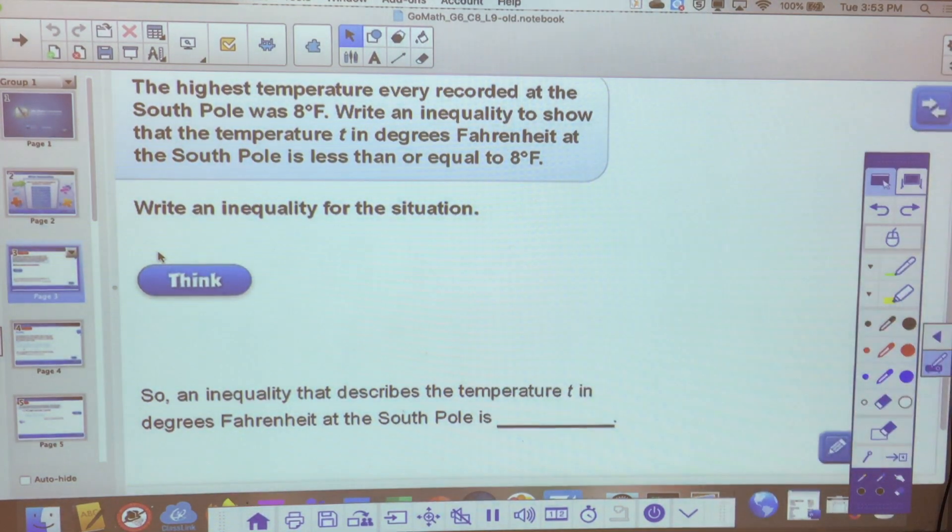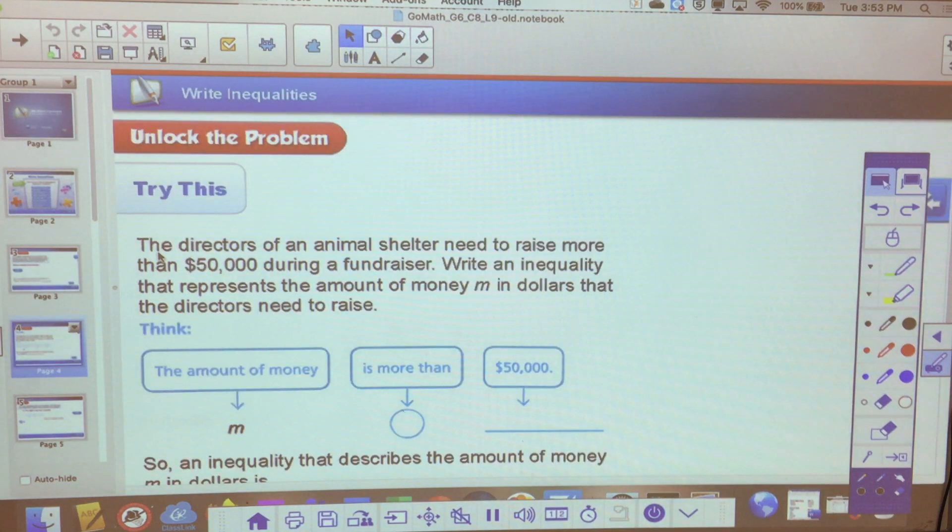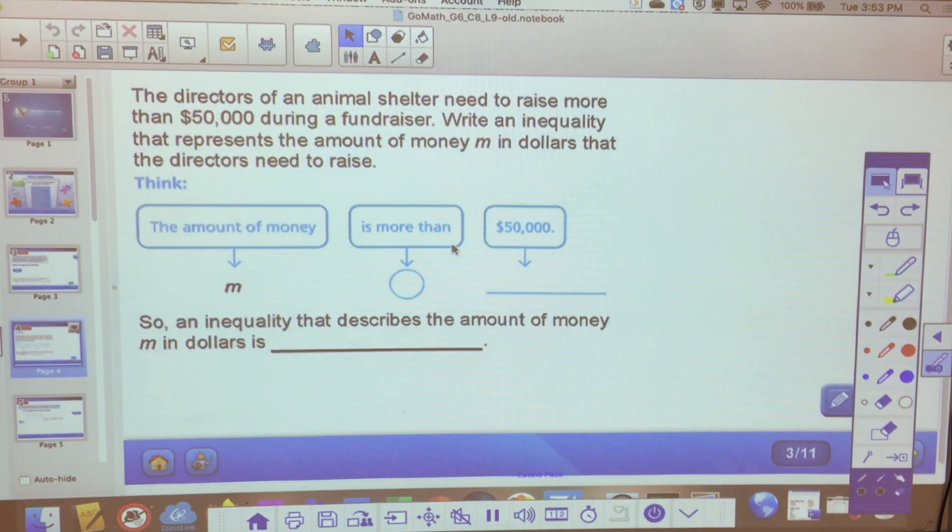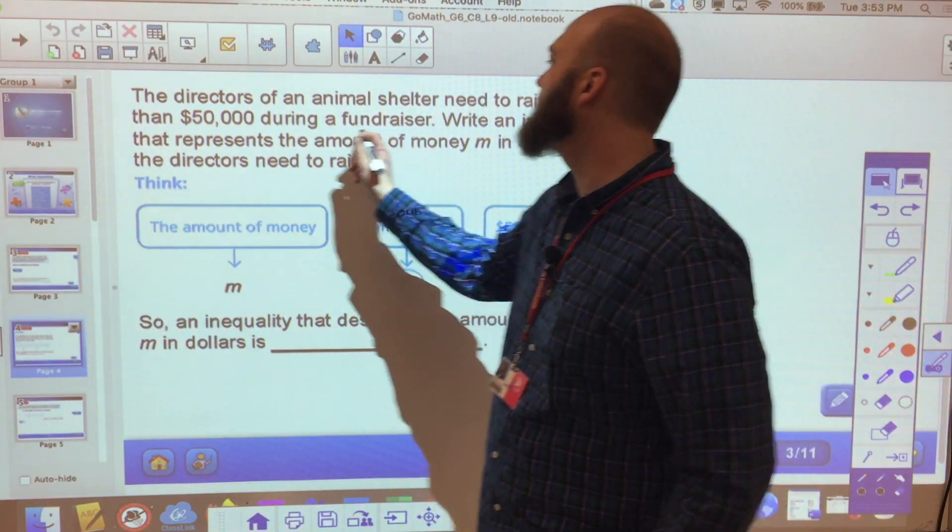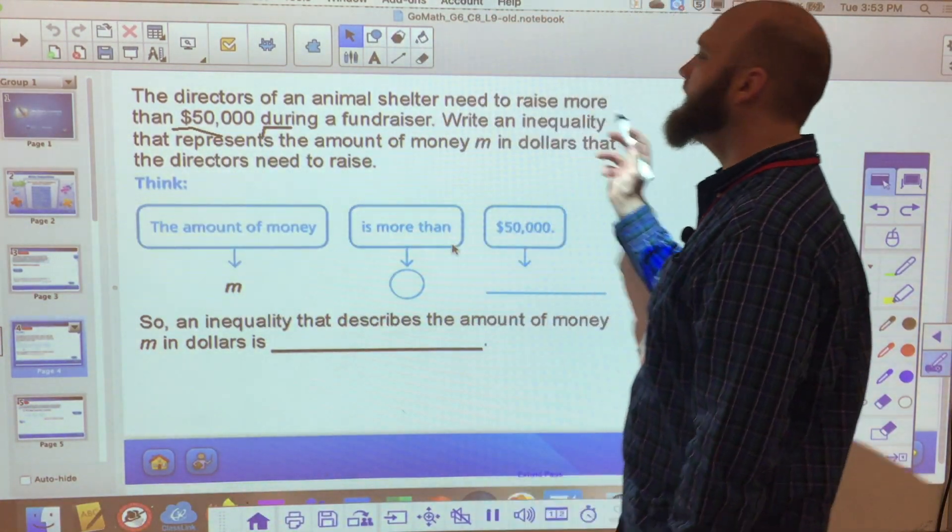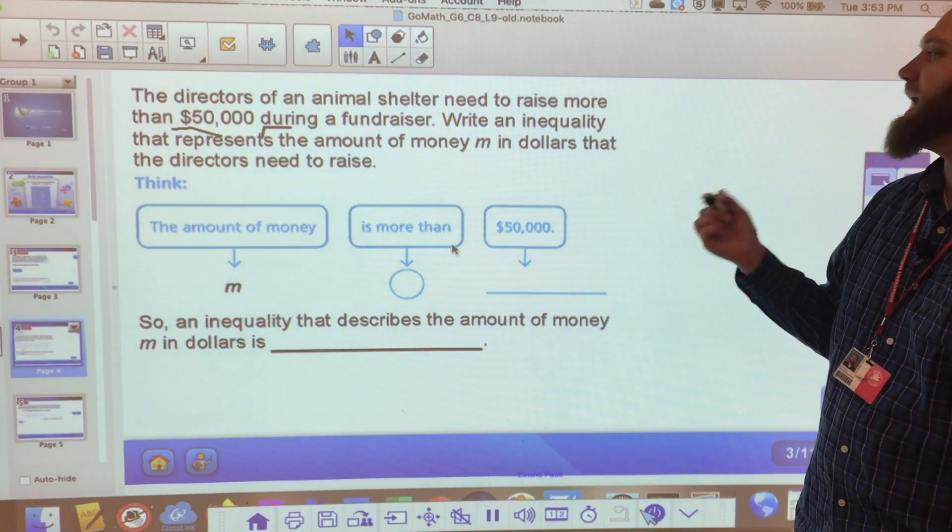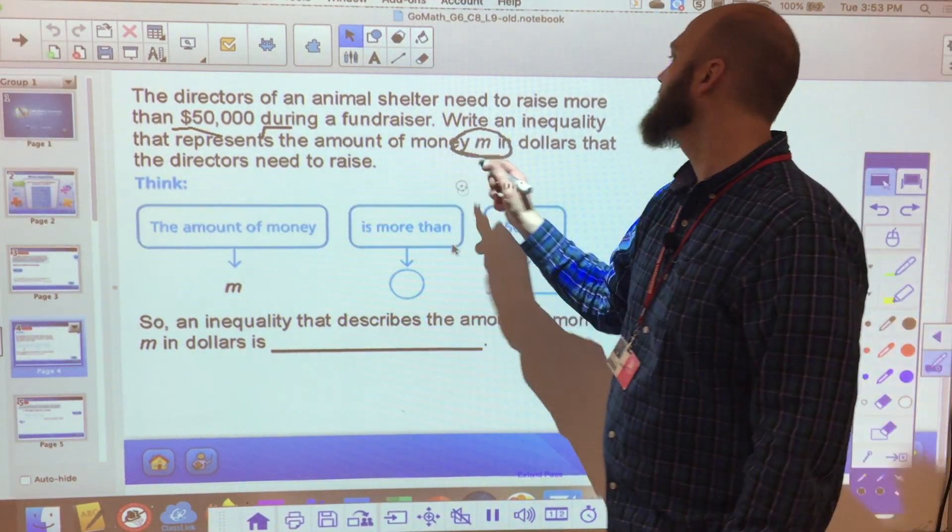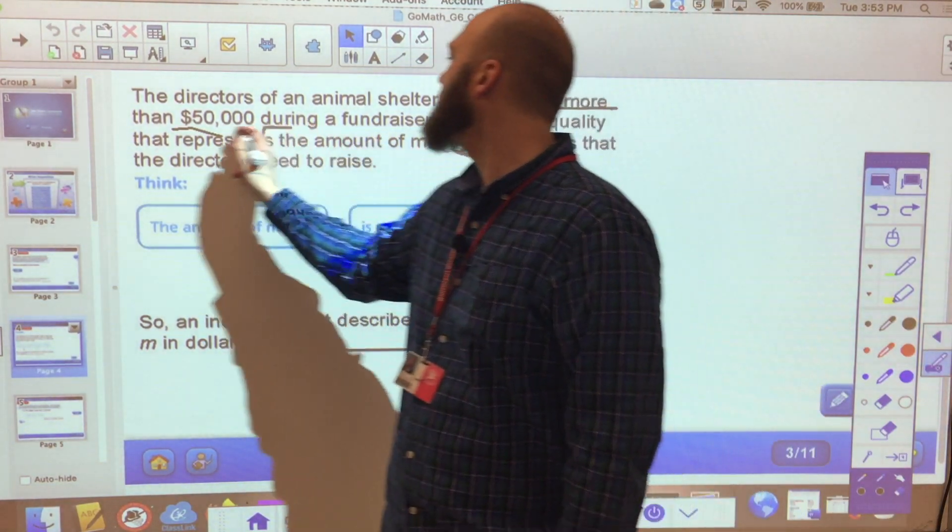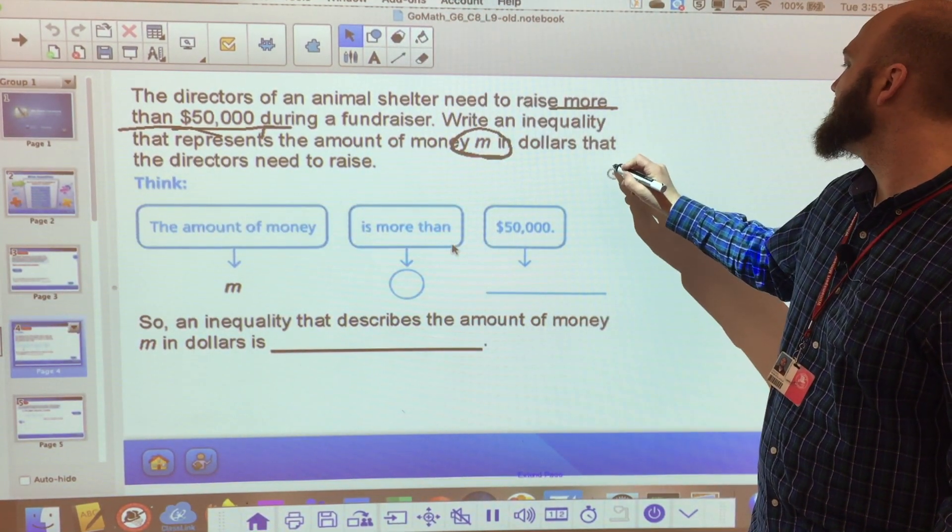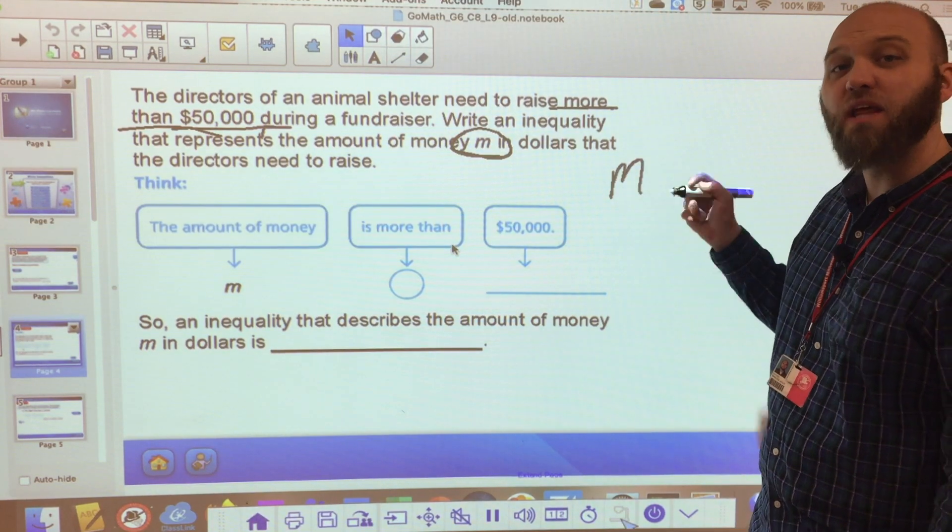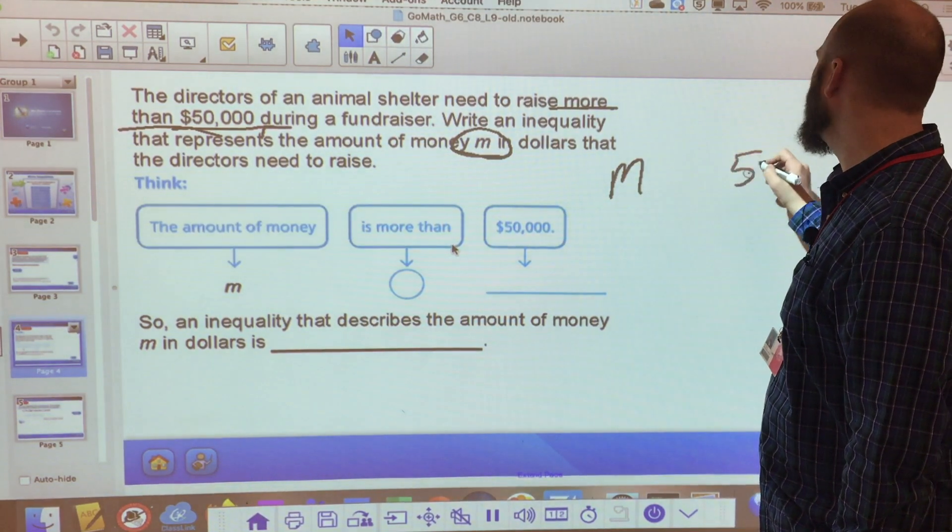Let's take a look at one more. The directors of an animal shelter need to raise more than $50,000 during a fundraiser. Write an inequality that represents the amount of money, M in dollars, they need to raise. Okay, so I have M, that's how much money we want to raise, right? And $50,000.